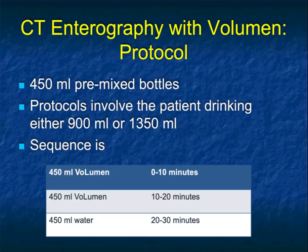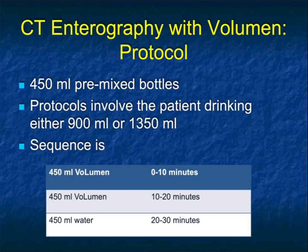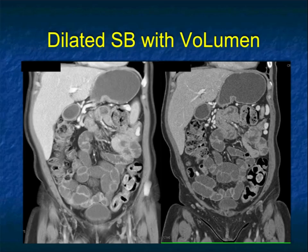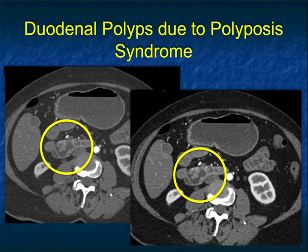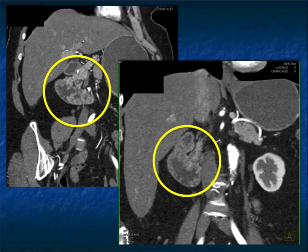The last thing about oral contrast I should mention is volumen. Volumen was popular for a while, particularly for GI bleeding and malabsorption patients. The problem with volumen is it essentially creates diarrhea — it has methylcellulose and brings water into the bowel. That distends the bowel, which is good, but patients often get substantial diarrhea. A normal volumen case looks like the patient has diarrhea. Volumen can be helpful for picking up subtle things like sprue, so I'll use it when evaluating malabsorption. Otherwise, water works very nicely. Here's an example of multiple polyps in the duodenum in a patient with volumen being used.